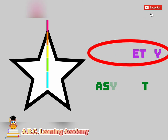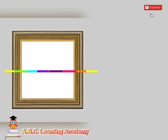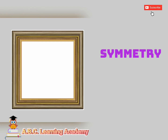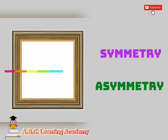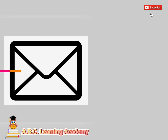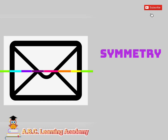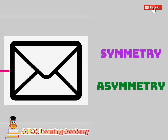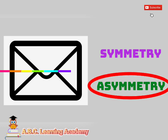Amazing. How about this? Is this one symmetry, or is it asymmetry? You're right, it's symmetry. This one — is this one symmetry, or is it asymmetry? The answer is asymmetry.